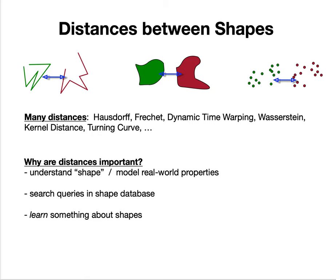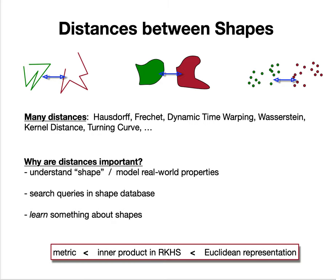In machine learning, there's this hierarchy of properties. If the distance is a metric, it gives you certain properties and access to certain algorithms, such as k-means clustering algorithms which work for any metric.